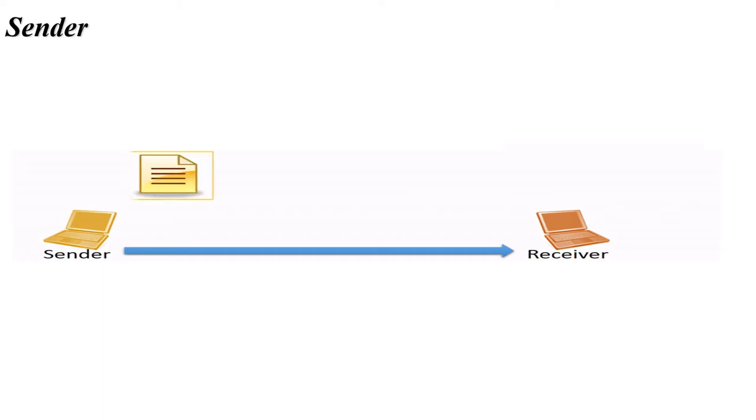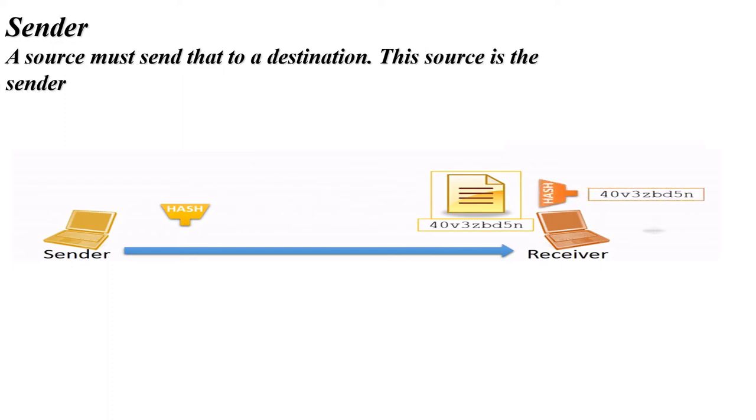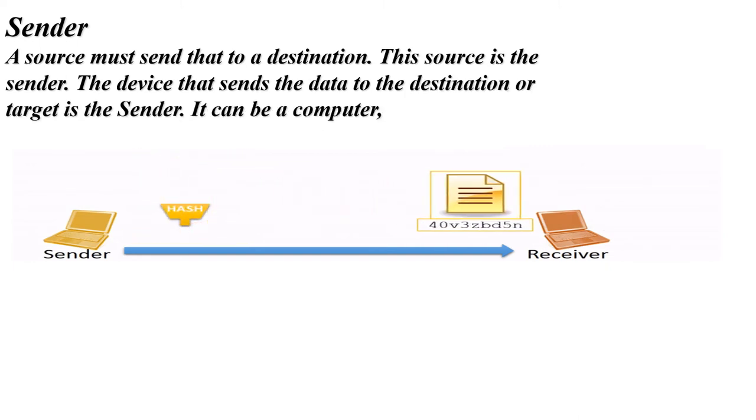The sender must send data to a destination. This source is the sender. The device that sends the data to the destination or target is the sender. It can be a computer, cell phone, video camera, and so on.